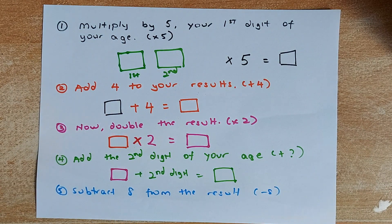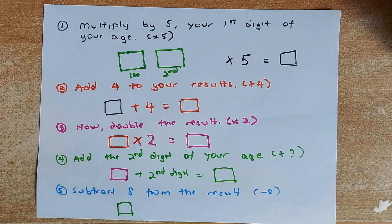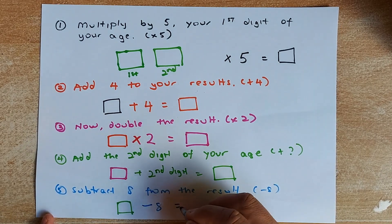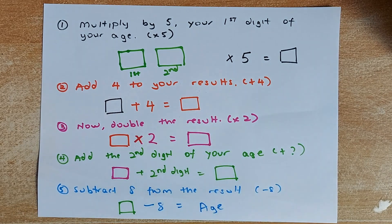And the final step you are going to do. You are now in the green box. You are going to minus 8 from the answer. And that will give you your age.